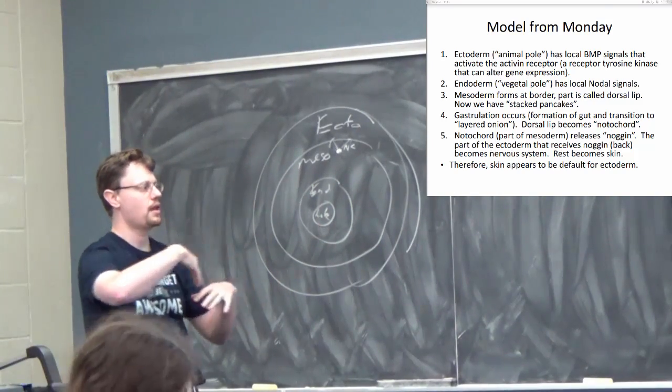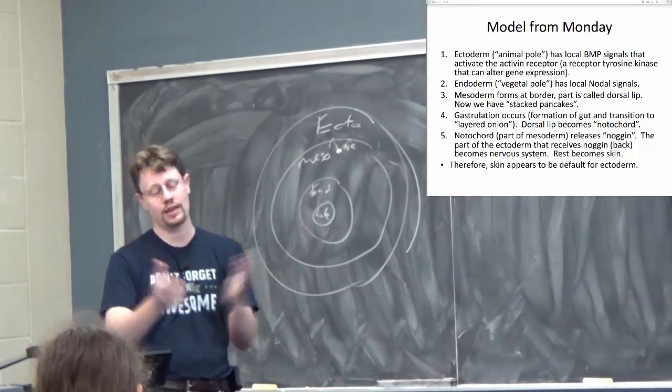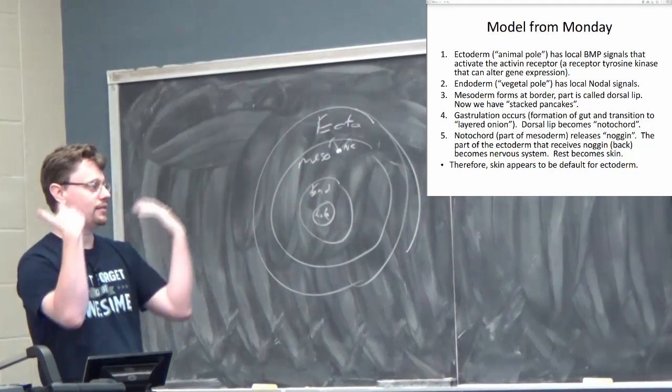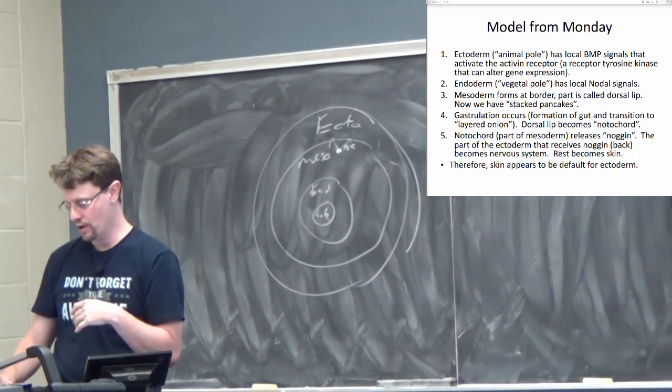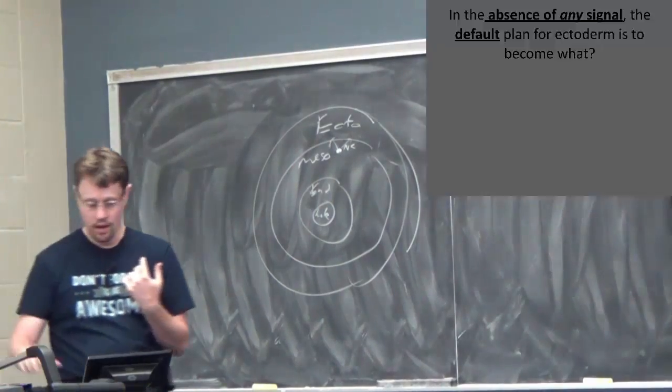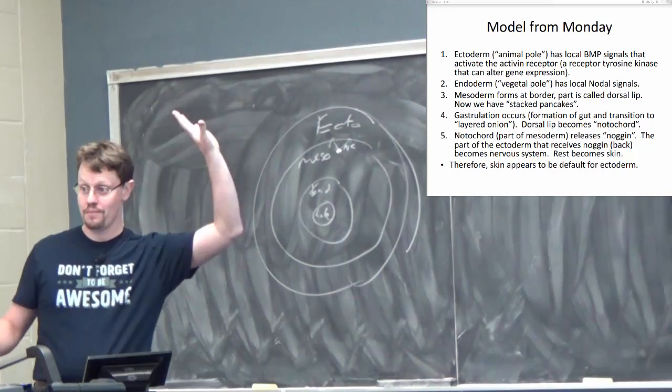And wherever there's noggin, we get a nervous system. Wherever there's not noggin, we get skin. And so we came to the conclusion that therefore the default plan for the ectoderm was to be skin, and when it gets the noggin signal, then it becomes brain. Any questions about that stuff from yesterday?